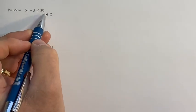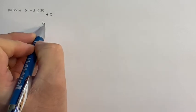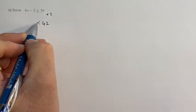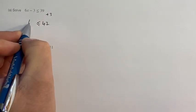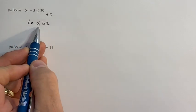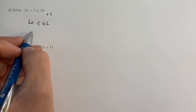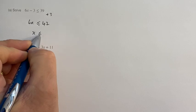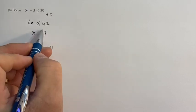So 39 plus the three is 42. We keep the symbol in place though, so 6x must be less than or equal to 42. And then if I divide both sides by 6...